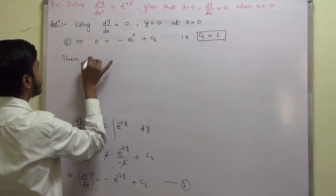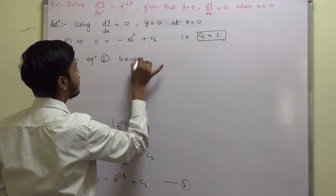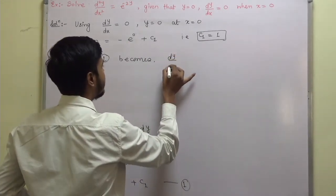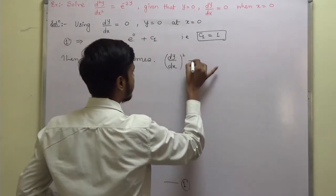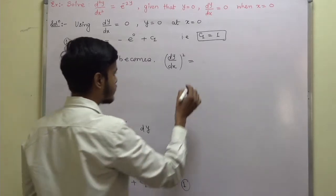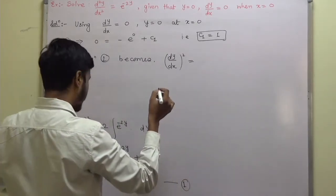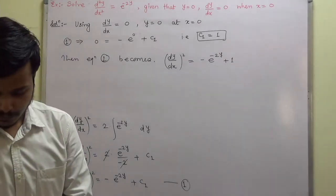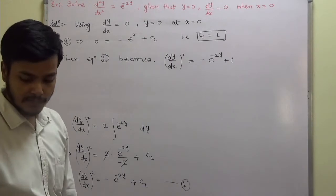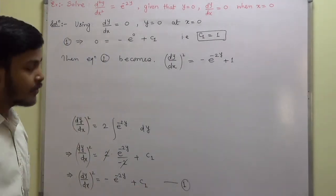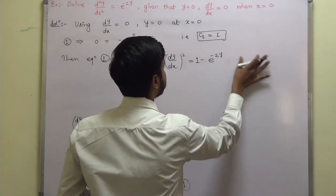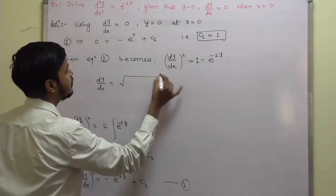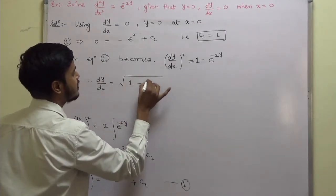Equation 1 then becomes: (dy/dx)² = 1 − e^(-2y). Therefore, dy/dx = √(1 − e^(-2y)).